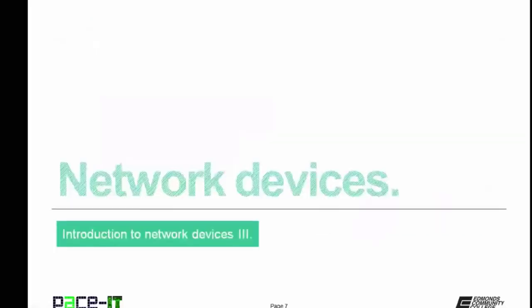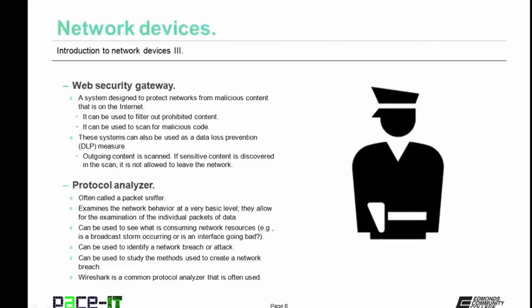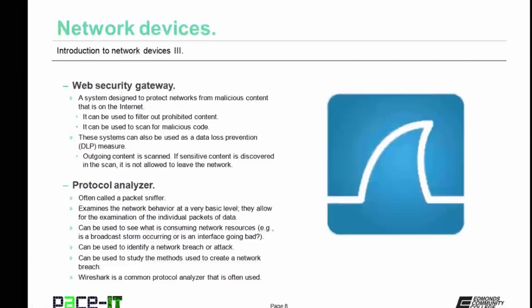Now let's move on to a brief discussion of some network devices. First up is the Web Security Gateway — a system designed to protect networks from malicious content on the internet. It can be used to filter out prohibited content and scan for malicious code. In some cases, these systems can also be used as a data loss prevention measure, where all outgoing content is scanned. If sensitive content is discovered, it's not allowed to leave the network, helping entities to keep their secrets within their own networks.